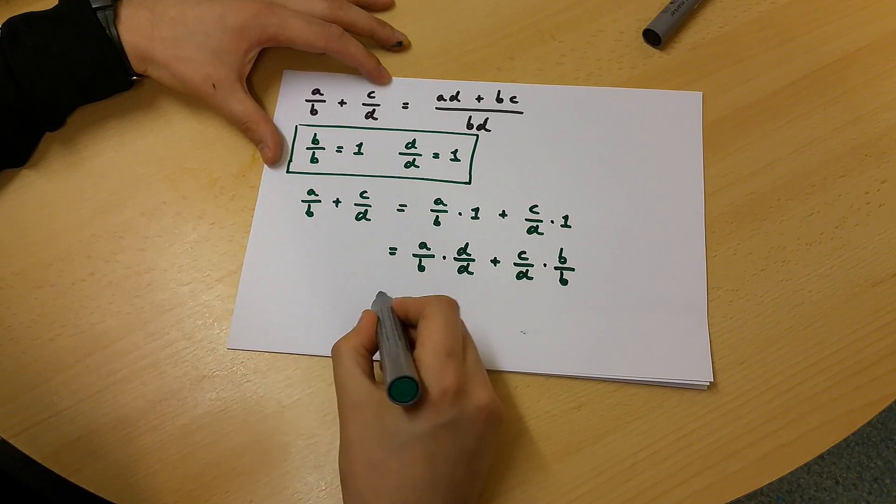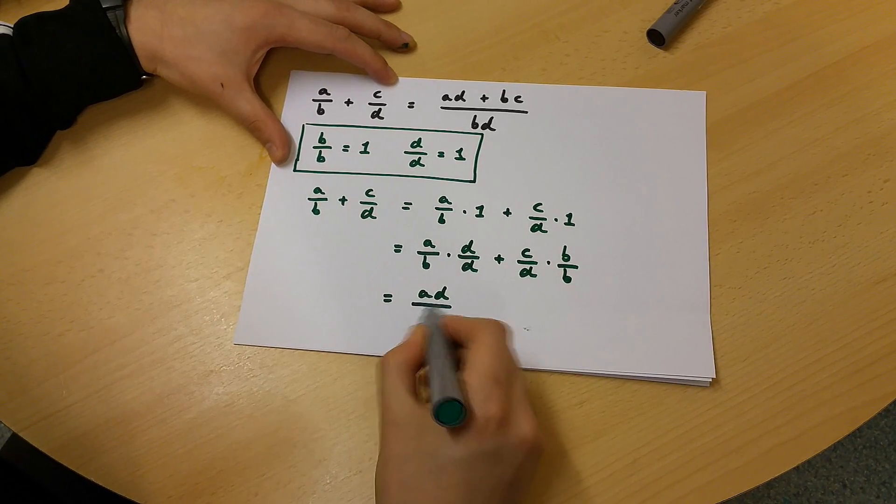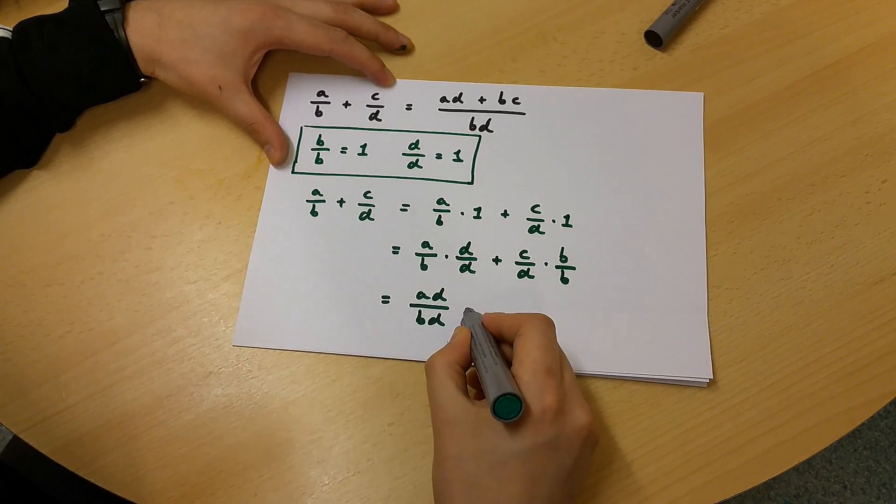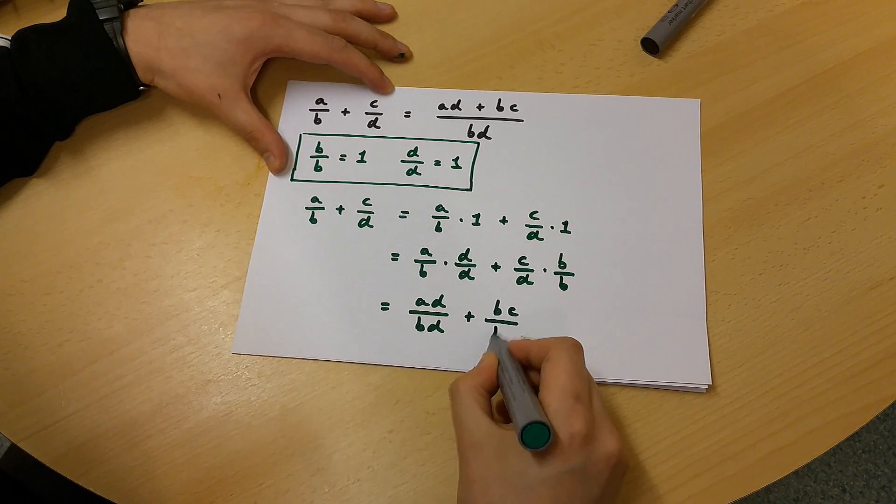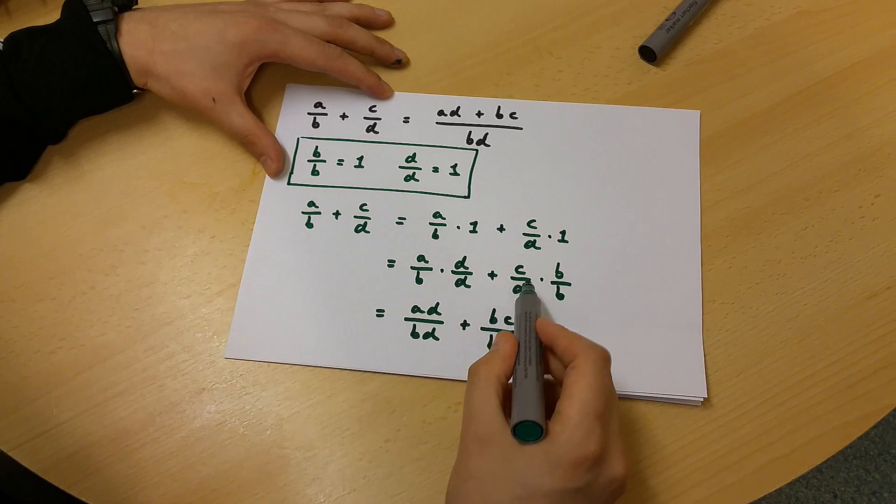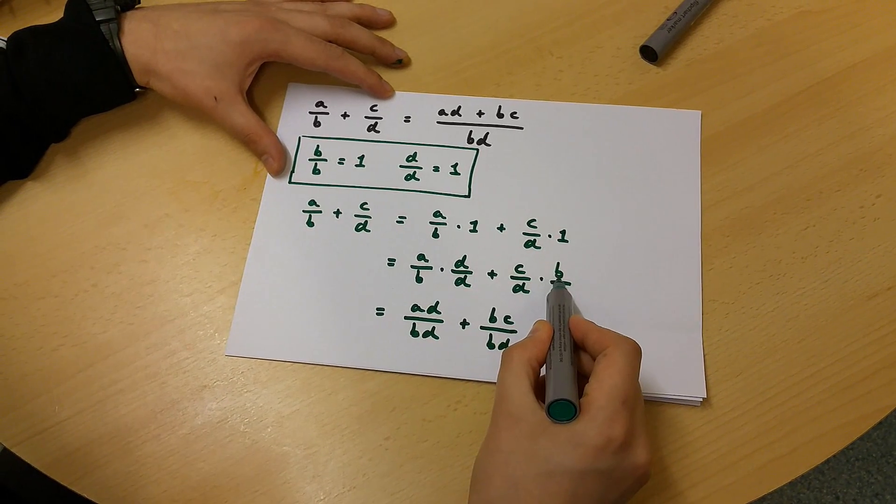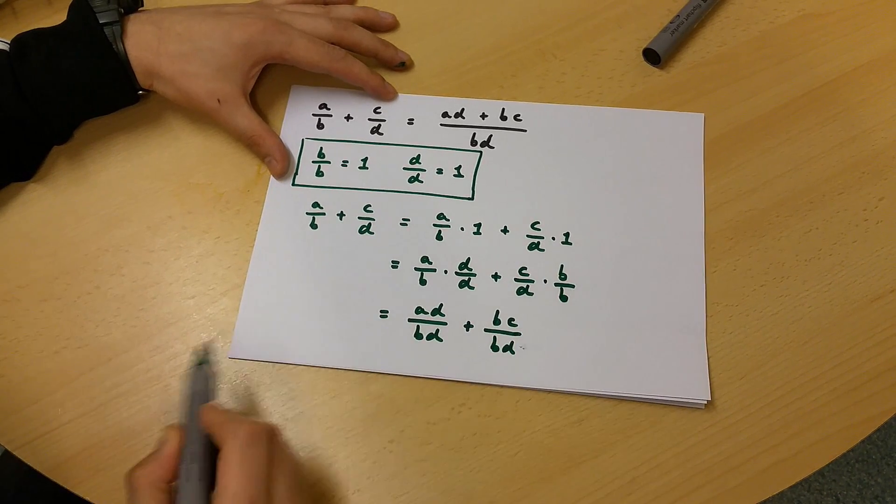Now this is equal to AD/BD plus BC/BD. Because when we're multiplying, it doesn't matter what order these letters are going to be in.